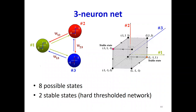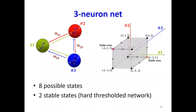Here is an example of a network with three neurons. This has eight possible states, and there are two stable states — one at the top left, one at the bottom right — for this particular configuration. Obviously it needs two states because of the symmetry. In this case we are considering a threshold activation as shown in the figures.